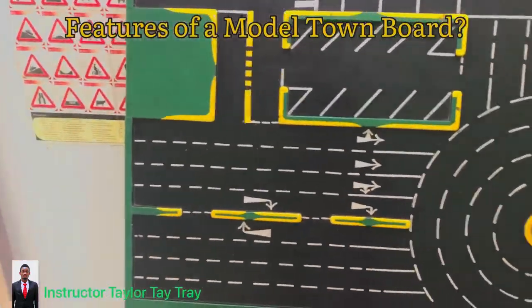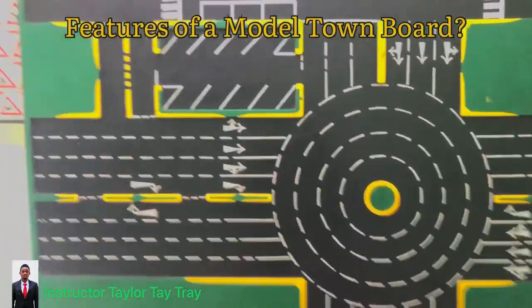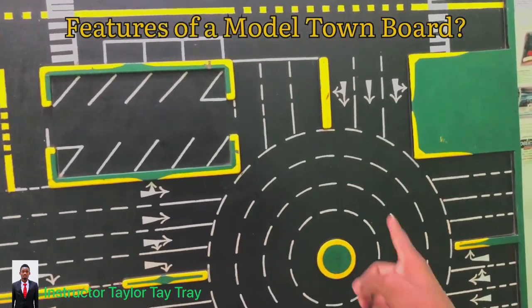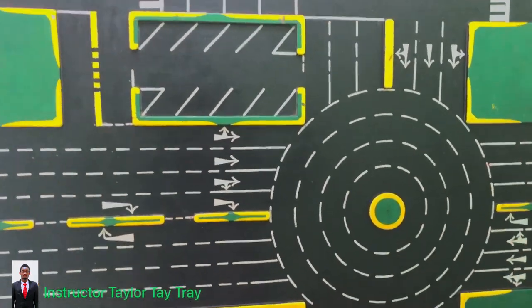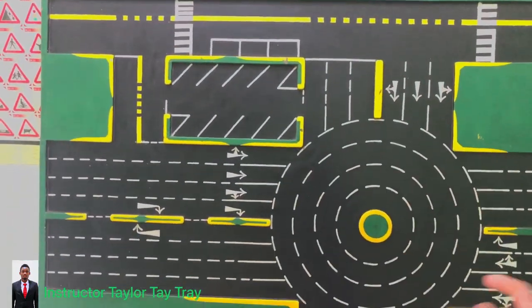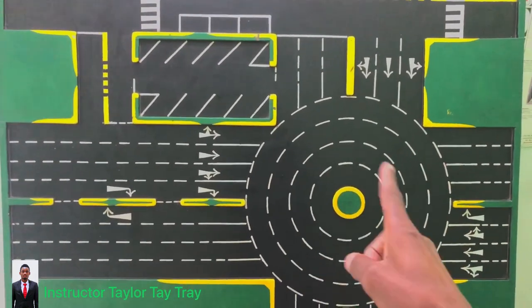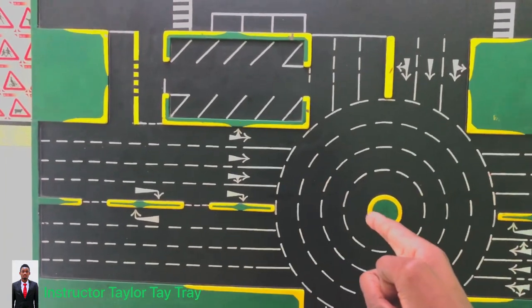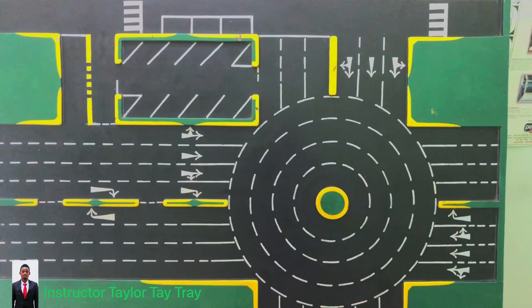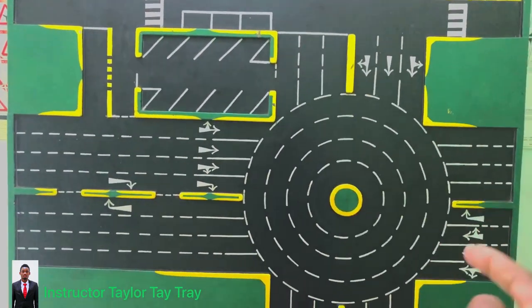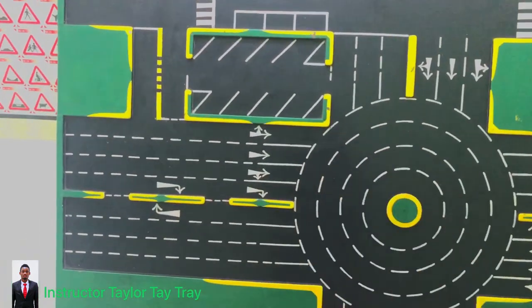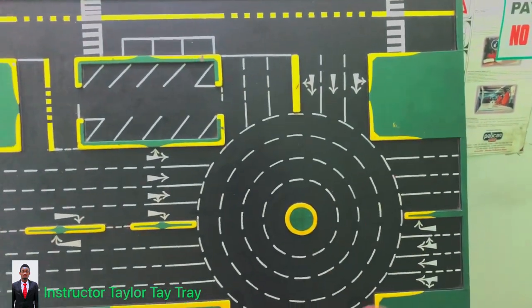One feature of the model turnboard that I like starting with is the roundabout. What is a roundabout? A roundabout is a junction where two or more roads are meeting in a circular form. Look at this roundabout. How many roads are meeting here? Most of you will say one, two, three, four, five, six, seven, eight. They are not eight, they are two. The major road and the minor road meet at the roundabout junction.